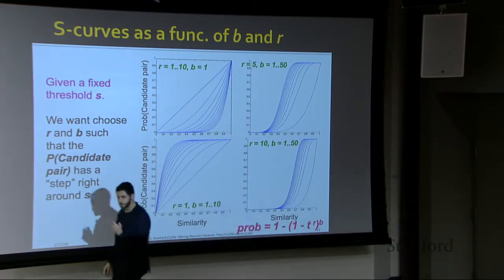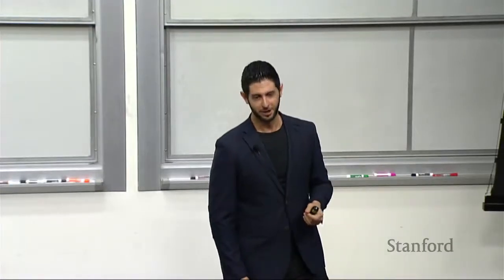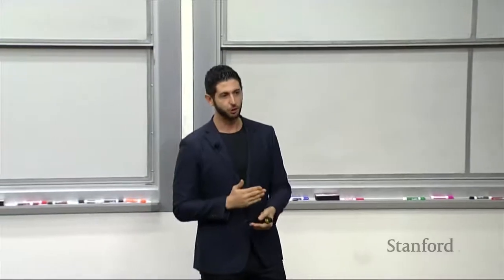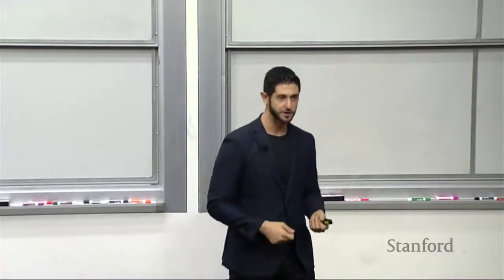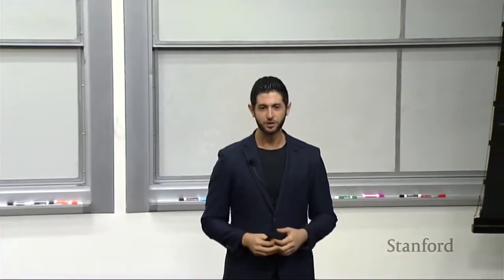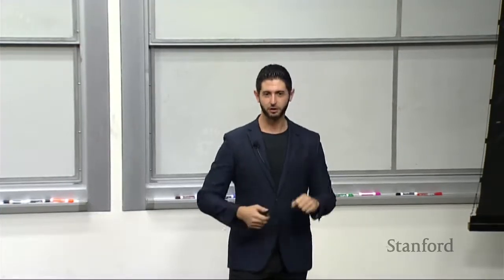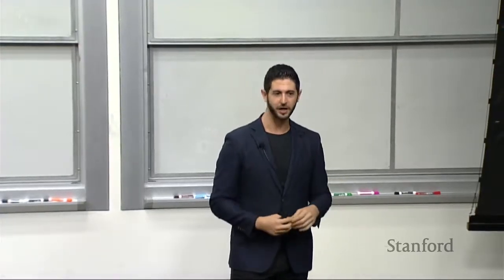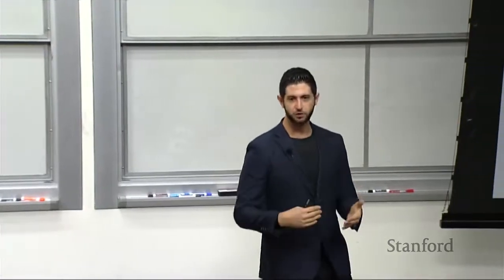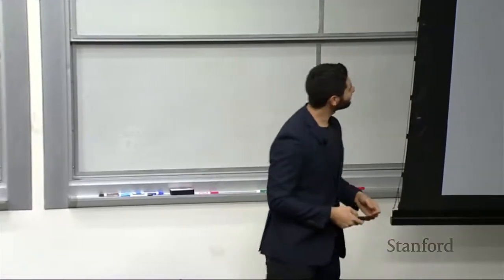A student asks: given a certain threshold, can we reverse-engineer R and B to get the best possible S-curve? Yes. We won't cover every detail today but the intuition and formulas are in the slides. Good LSH libraries do this for you. Additionally, when working with very large datasets, you can work with samples first to make assumptions, then give a full pass to verify.